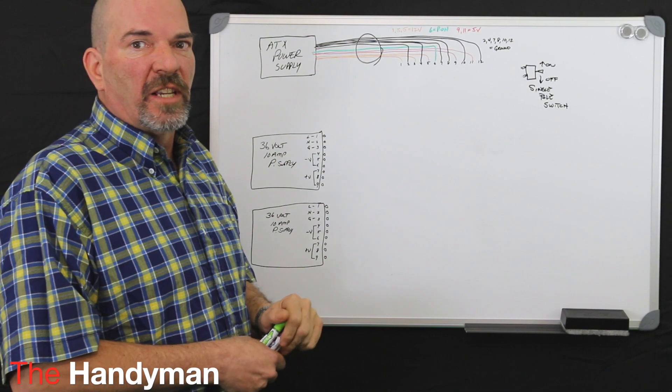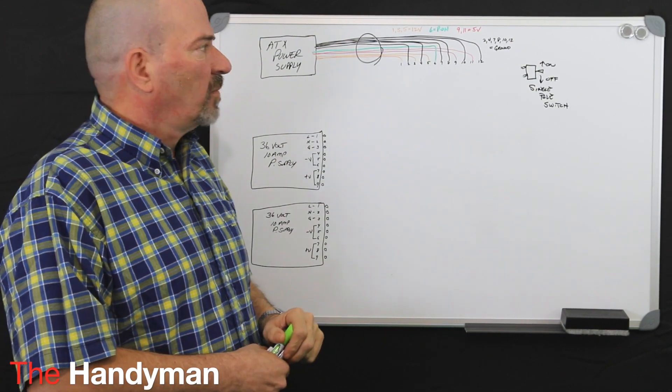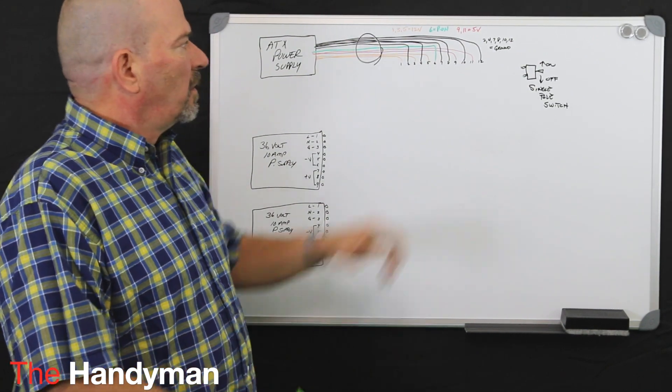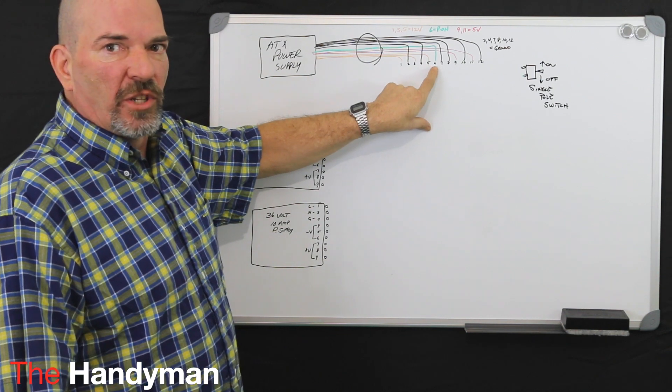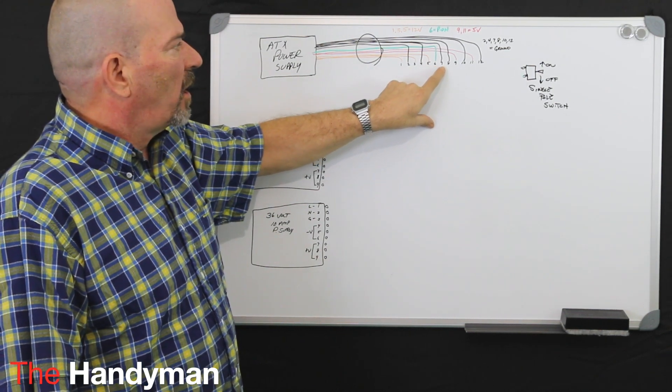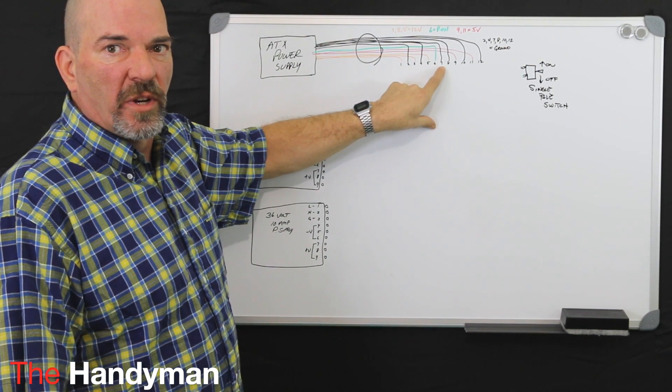And hopefully you tested your power supply. To do that, you take your green wire, which is your power on, and twist it with one of the grounds, one of your black wires.